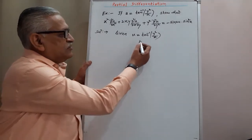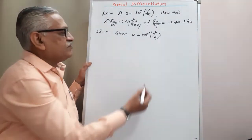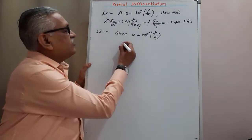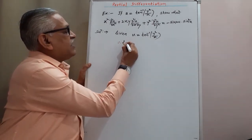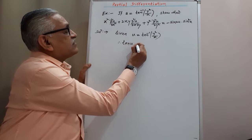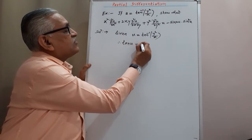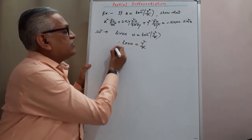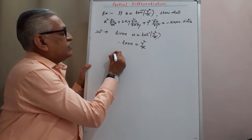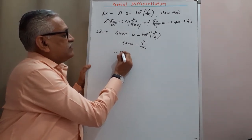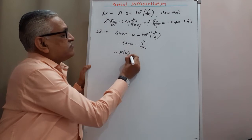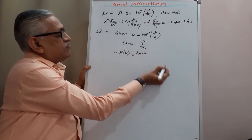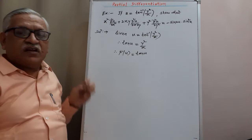Therefore, to apply Euler's theorem, we transfer this to the left-hand side. We get tan(u) = y²/x, and we call this f(u). Therefore, f(u) = tan(u), a function of u.